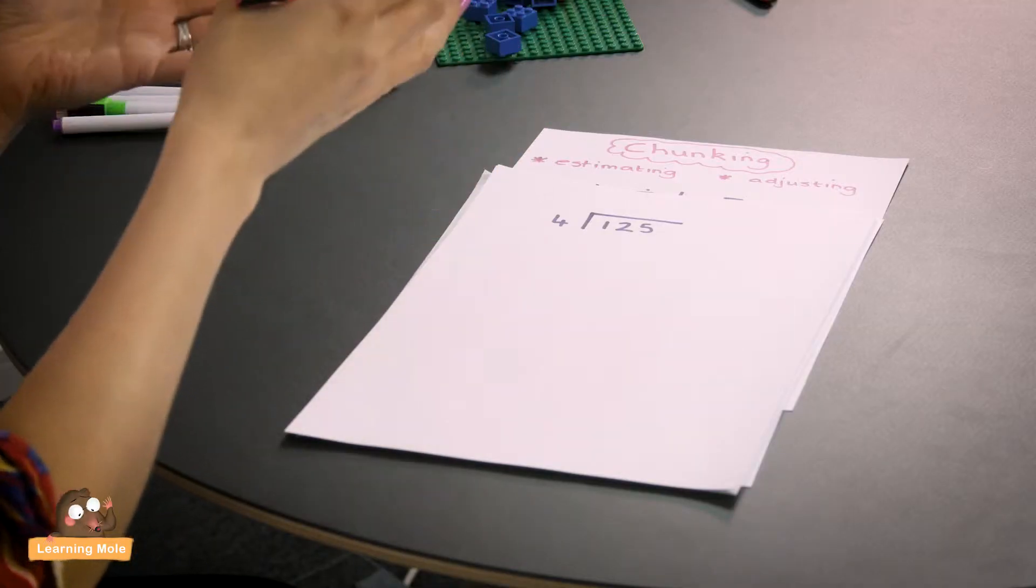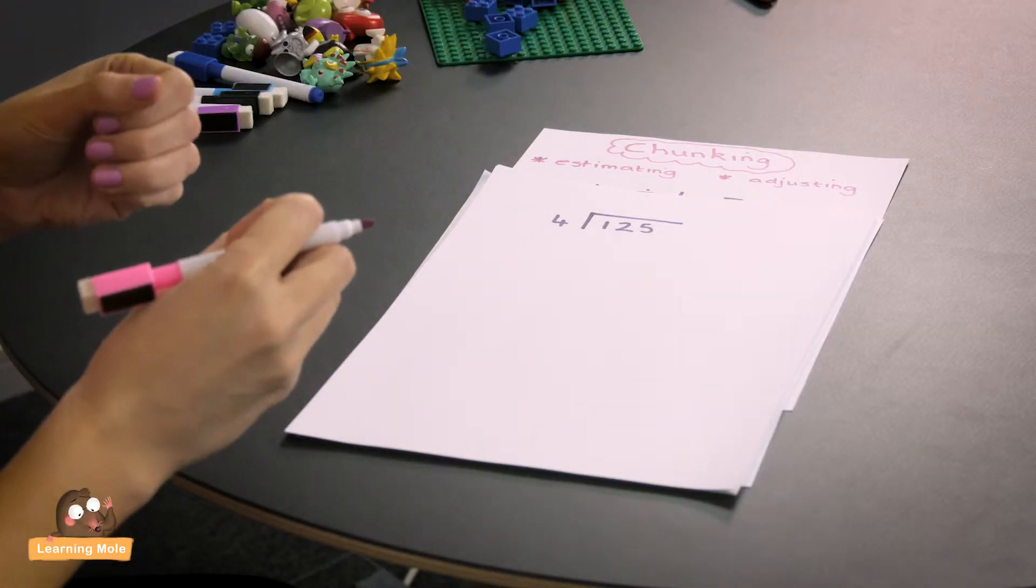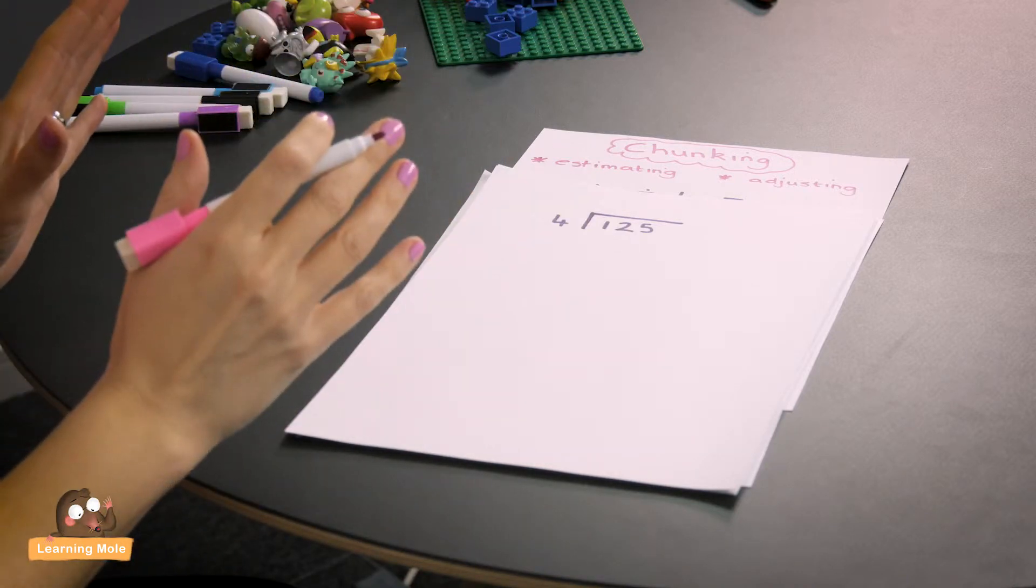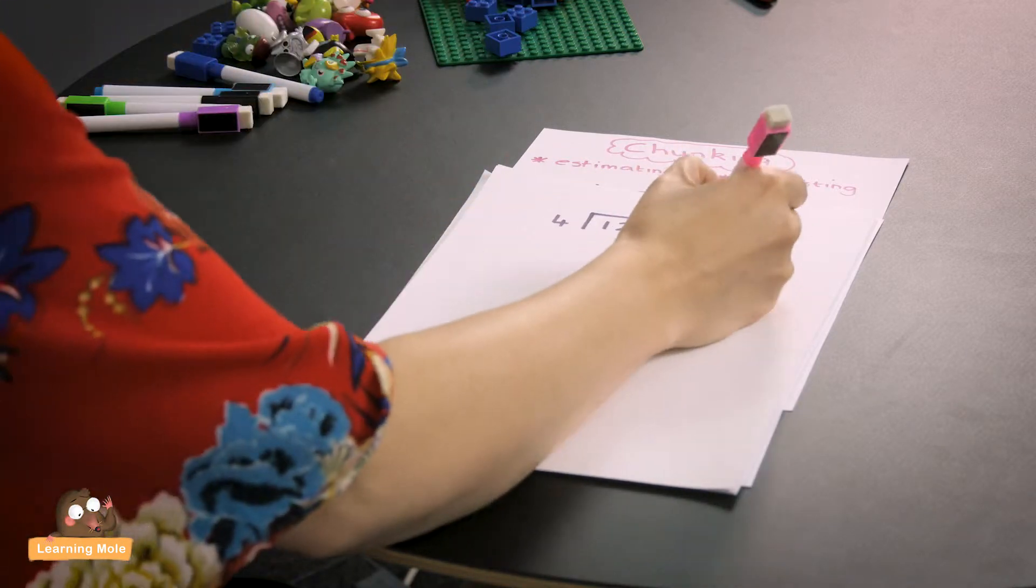Would that be easier to work with? Would it be a bigger chunk? Would it be able to help us make the calculation proceed a little bit more quickly? And of course that lovely rich discussion will come through. So yes, I want to do 4 times 10. I've decided no, that's not a big enough chunk. Now I want to do 4 times 20.